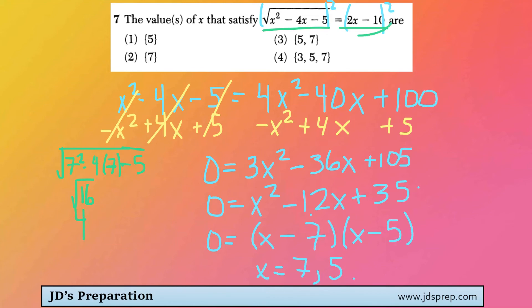And then we'll compare that to 2x minus 10. So that'd be 2 times 7 minus 10. That's 14 minus 10, which is 4. So that checks out. So 7 is definitely a good answer.